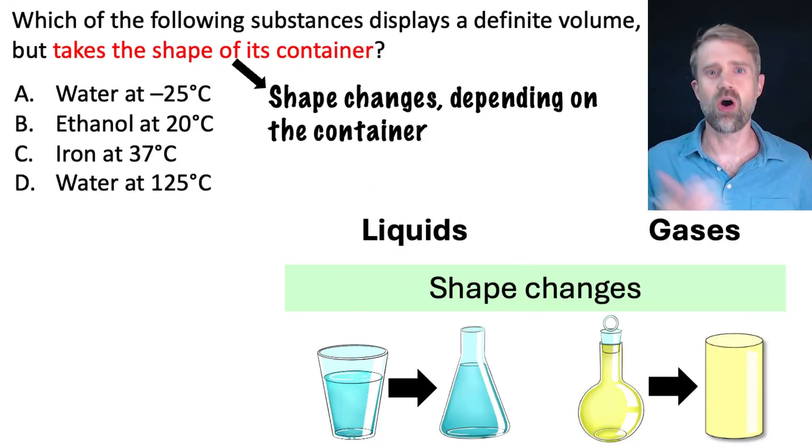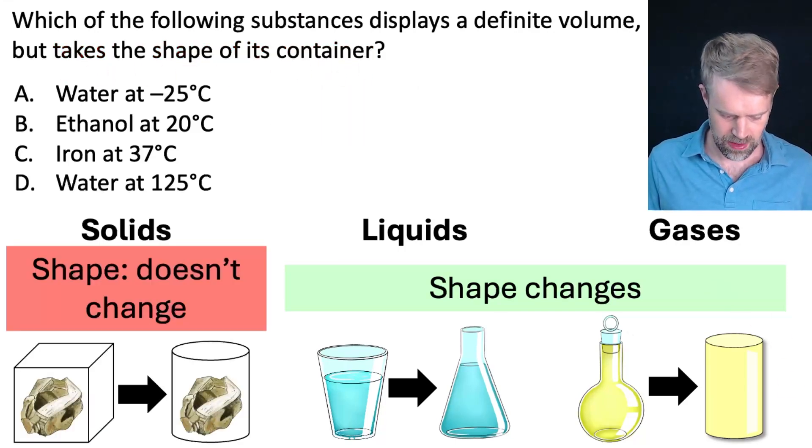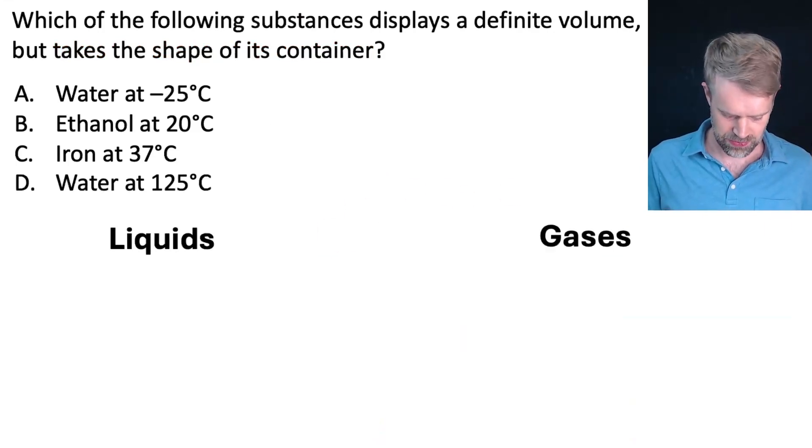The shape of gases also changes in different containers. So both liquid and gases take the shape of their container. But the shape of solids does not change. When you put a solid into a different container, obviously it stays the same shape. So that means that if we're looking for something that takes the shape of its container, it could be a liquid or a gas. So these are the two possibilities, liquid or gas. Now let's see how we can narrow this down even more.